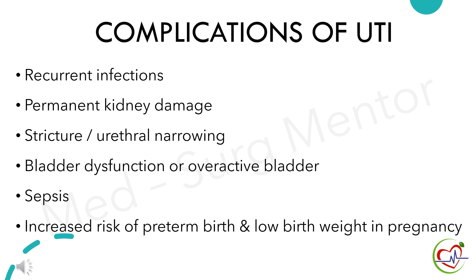Complications of urinary tract infection often occur as a result of untreated infection. The risk is also high in people with underlying kidney disorders, diabetes, or diseases affecting the immune system. Complications include recurrent infections, permanent kidney damage, stricture or urethral narrowing, bladder dysfunction or overactive bladder, sepsis, and increased risk of preterm birth and low birth weight in pregnancy.